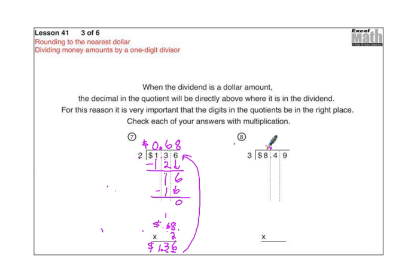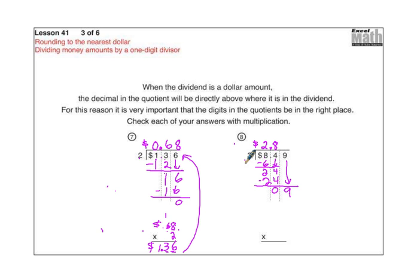Once again, don't forget: decimal point and dollar sign straight up to the top. We never mix a decimal point with a cent sign — always decimal point with a dollar sign; they both start with D. Three goes into eight two times; three times two is six; eight minus six is two. Bring down the four — twenty-four divided by three is eight; eight times three is twenty-four; subtract to get zero. Bring down the nine — nine divided by three is three; three times three is nine; subtract to get zero. Checking: two eighty-three times three — three times three is nine; eight times three is twenty-four, carry the two; six plus two is eight. Decimal point, dollar sign: eight dollars and forty-nine cents.